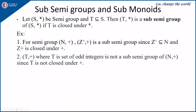Next are sub-semigroups and submonoids. Let (S, *) be a semigroup — it satisfies closure and associativity. Suppose you take a subset T of S; then (T, *) is a sub-semigroup of (S, *) if T is closed under *, which means if you pick elements from T and apply * the result stays in T.